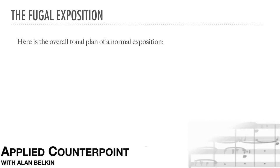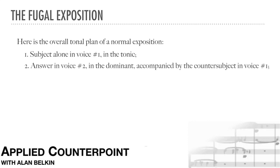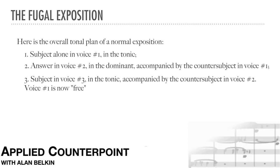Here is the overall tonal plan of a normal exposition: (1) Subject alone in voice 1 in the tonic; (2) Answer in voice 2 in the dominant, accompanied by the countersubject in voice 1; (3) Subject in voice 3 in the tonic, accompanied by the countersubject in voice 2. Voice 1 is now free, and this alternation continues.